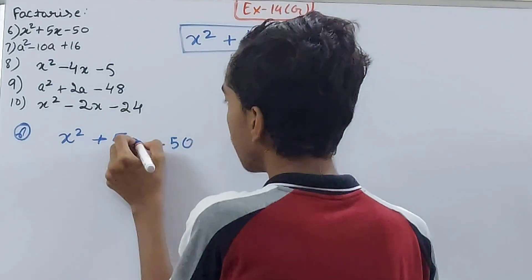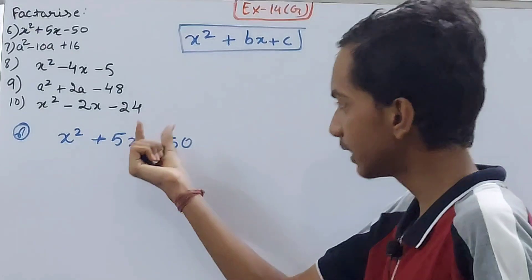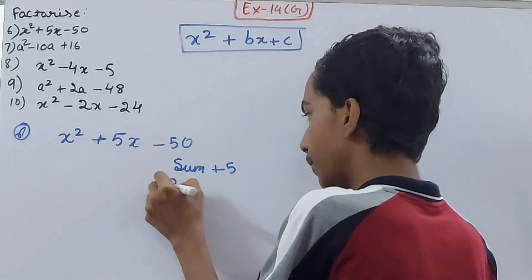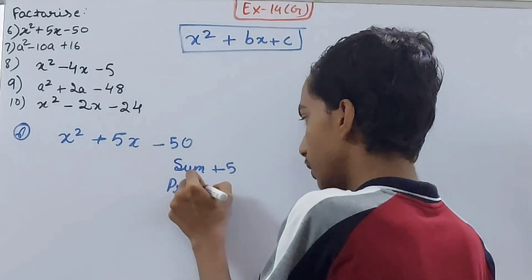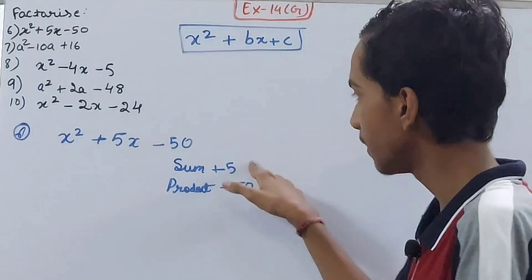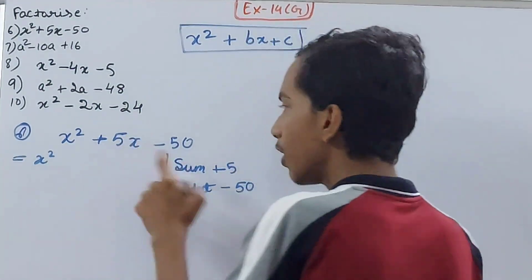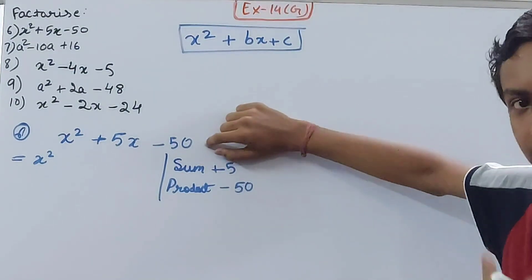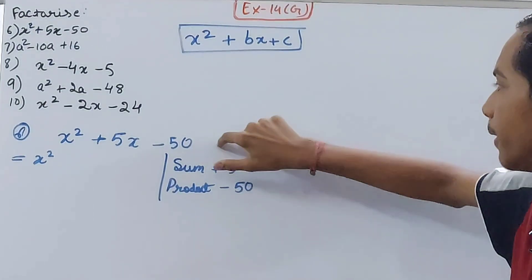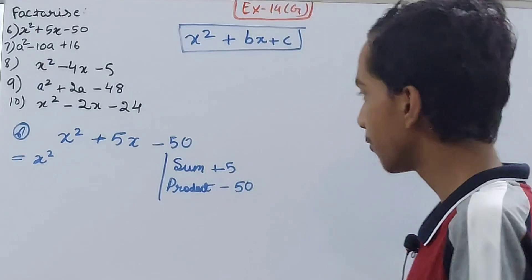You have to split the middle term in such a way that the sum is 5 and the product is minus 50. Be careful of the two signs: plus 5 and minus 50. Now think of factors of 50 whose sum is 5 and product is 50. Let's see — 50 goes 10 and 5.